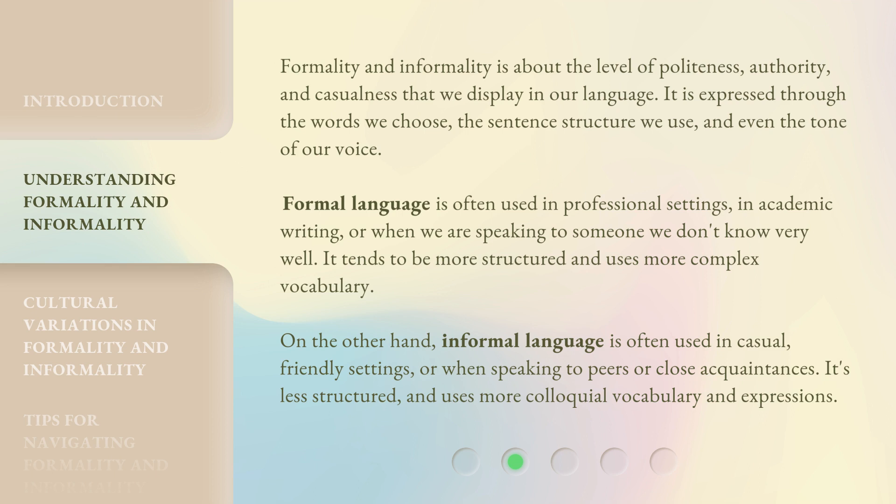Formal language is often used in professional settings, in academic writing, or when speaking to someone we don't know very well. It tends to be more structured and uses more complex vocabulary. On the other hand, informal language is often used in casual, friendly settings, or when speaking to peers or close acquaintances. It's less structured and uses more colloquial vocabulary and expressions.